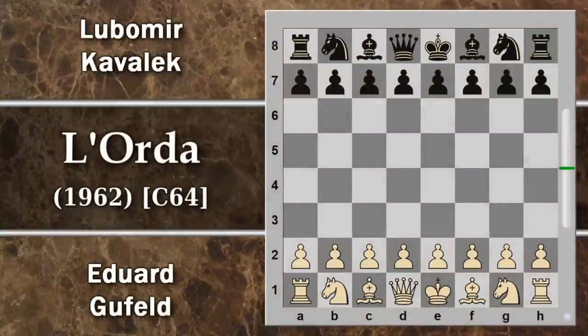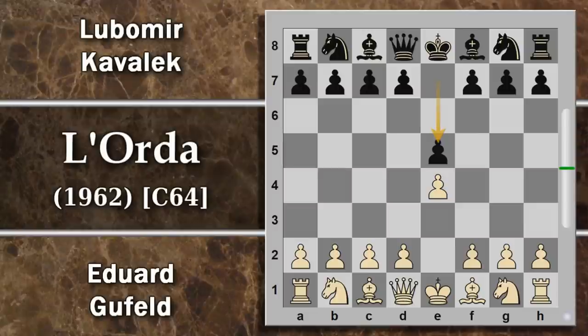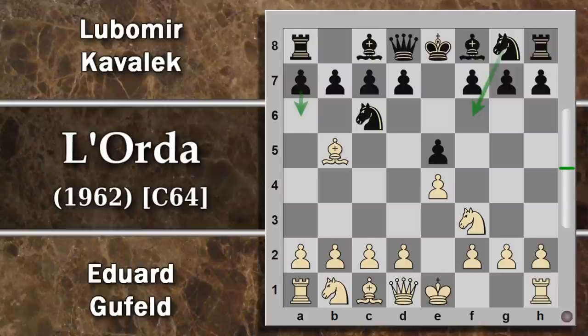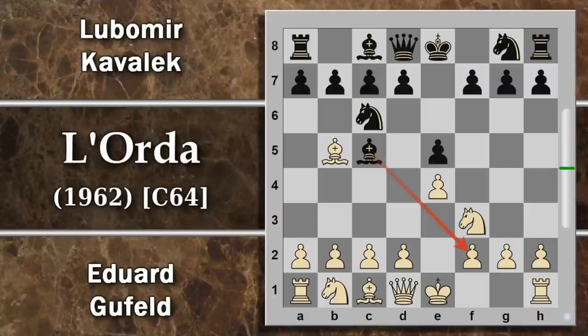Gufeld apre con e4 e Cavalek risponde con e5, quindi partita di gioco aperto. Cavallo f3 e cavallo c6: apertura spagnola. Si gioca una variante poco comune negli scacchi moderni, con l'alfiere c5, la spagnola classica. Il nero tira subito fuori l'alfiere; di solito prima si sviluppa il cavallo, cercando di scacciare l'alfiere avversario, ma attacca f2.